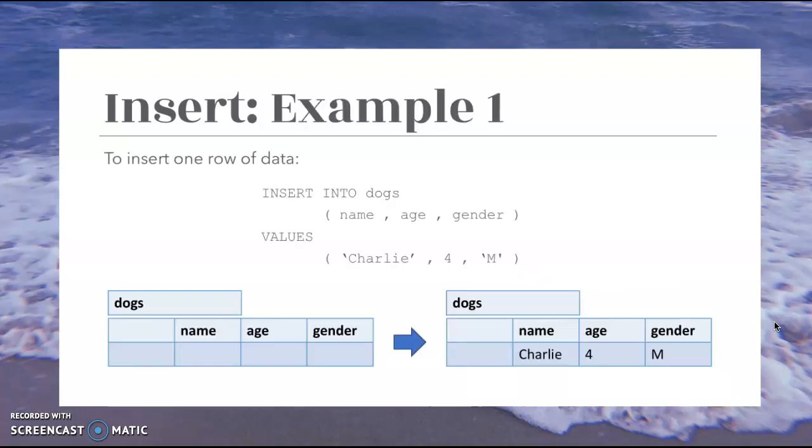So let's take a look at an example here. In order to insert one row of data, this is what we have. Insert into dogs, which is the name of our example table right here. And then in parentheses, we have name, age, and gender, which are these three columns. And then values being specified are Charlie. And if it's a value that's not a number, it has to be within apostrophes.